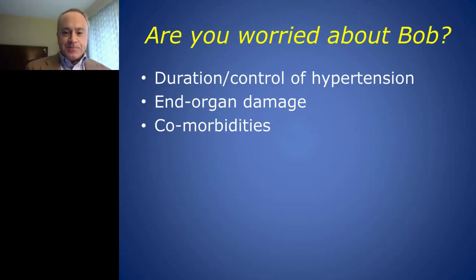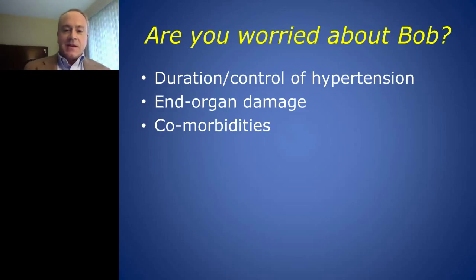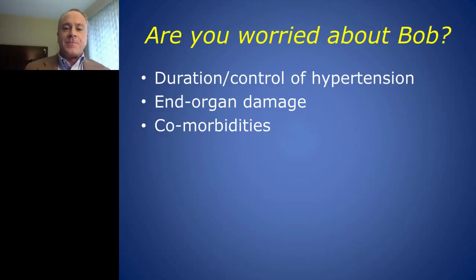Would you be worried about Bob? There are a couple of things that would be atypical in this situation. The duration of his hypertension is actually short-lived — only a few years as recorded. He has evidence of end organ damage: apparent kidney damage and ventricular hypertrophy, suggesting long duration out-of-control hypertension. He also has a typical aggregate of comorbidities that elevate his risk: insulin resistance, prediabetes, and sleep apnea.